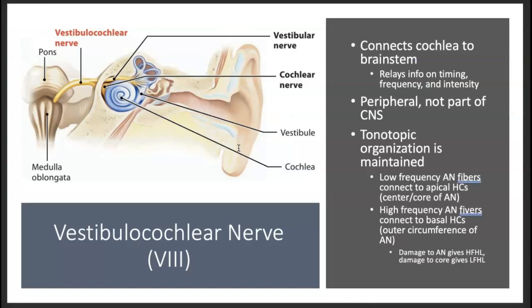Now the vestibulocochlear nerve, or the auditory nerve, there's a balance portion of it and then there's an auditory portion of the eighth cranial nerve. I'm sure you talked about this a lot in your anatomy class. This is still part of the peripheral nervous system. After the auditory nerve, we start to consider all those structures part of the central auditory nervous system. So this is like the last part of what we call the peripheral auditory nervous system.